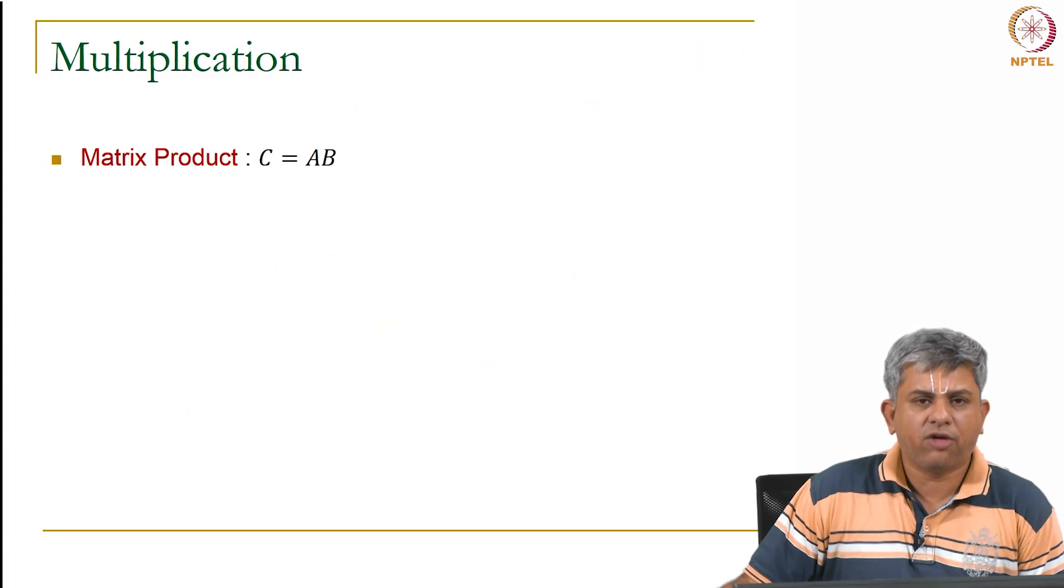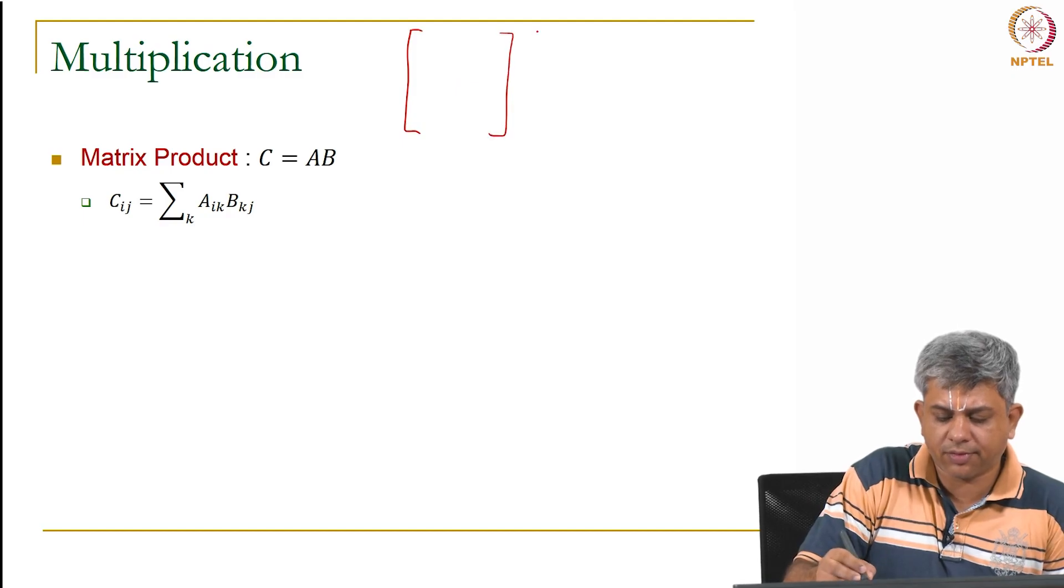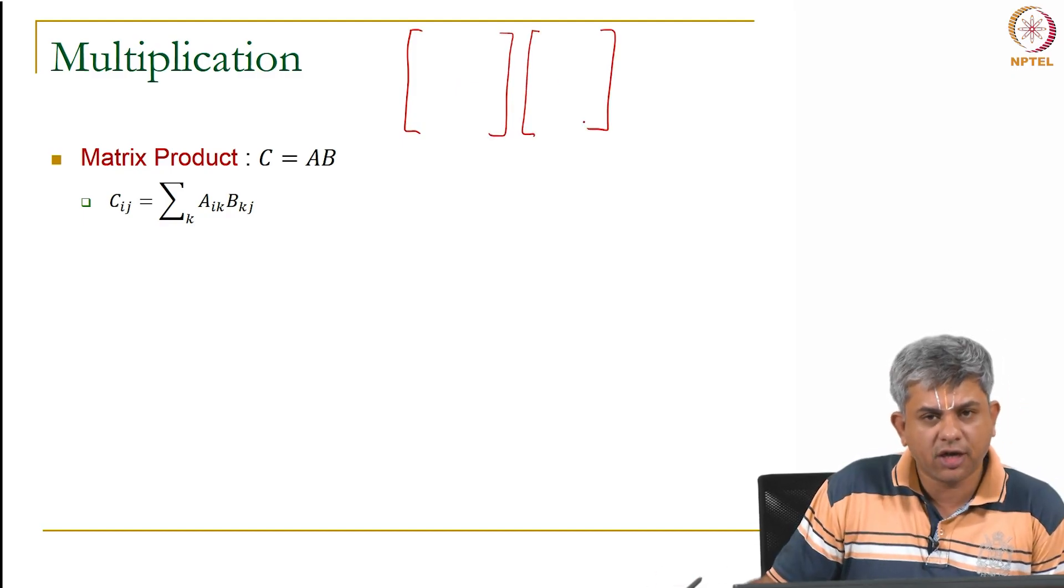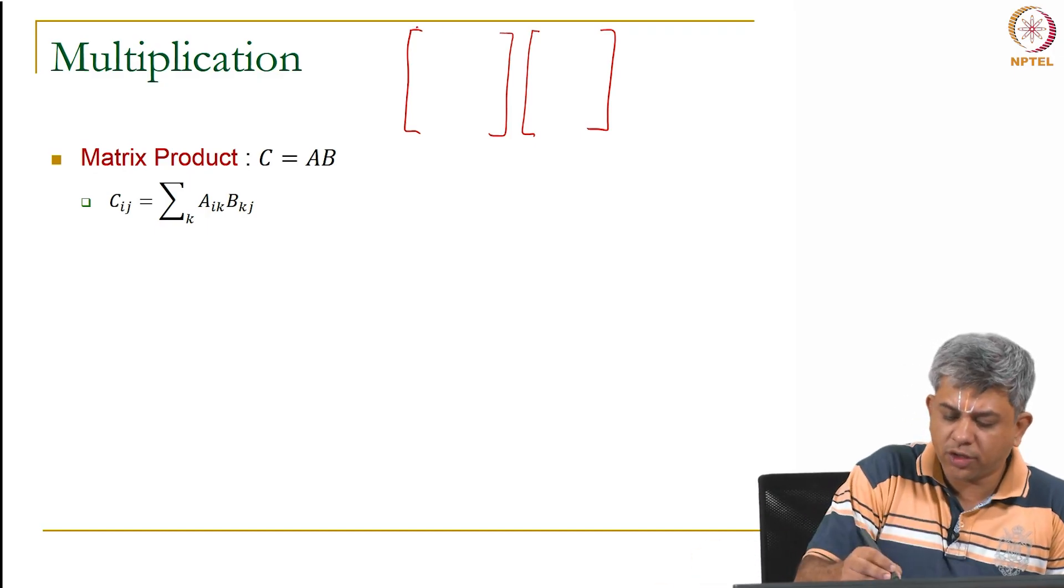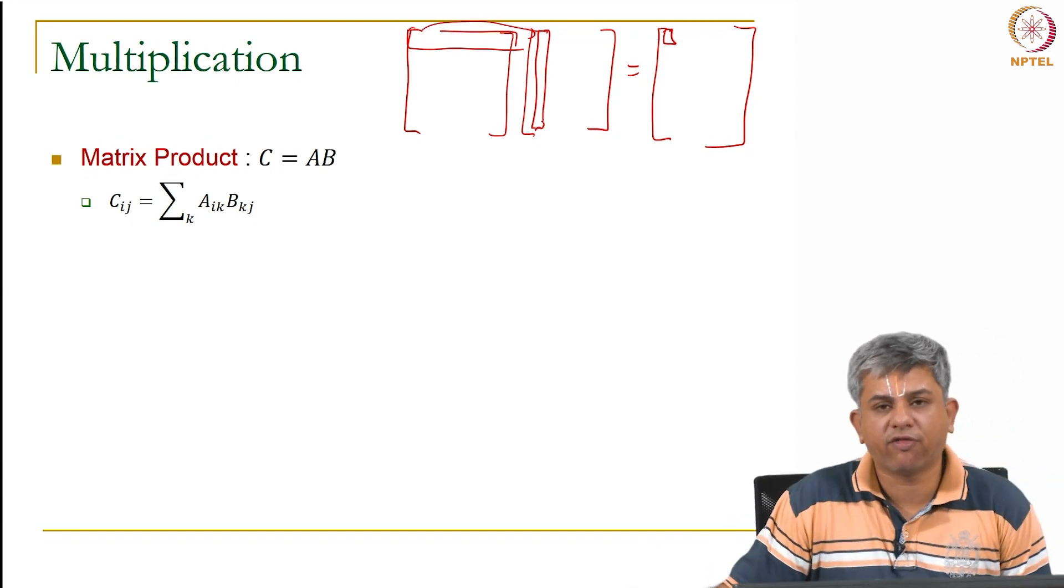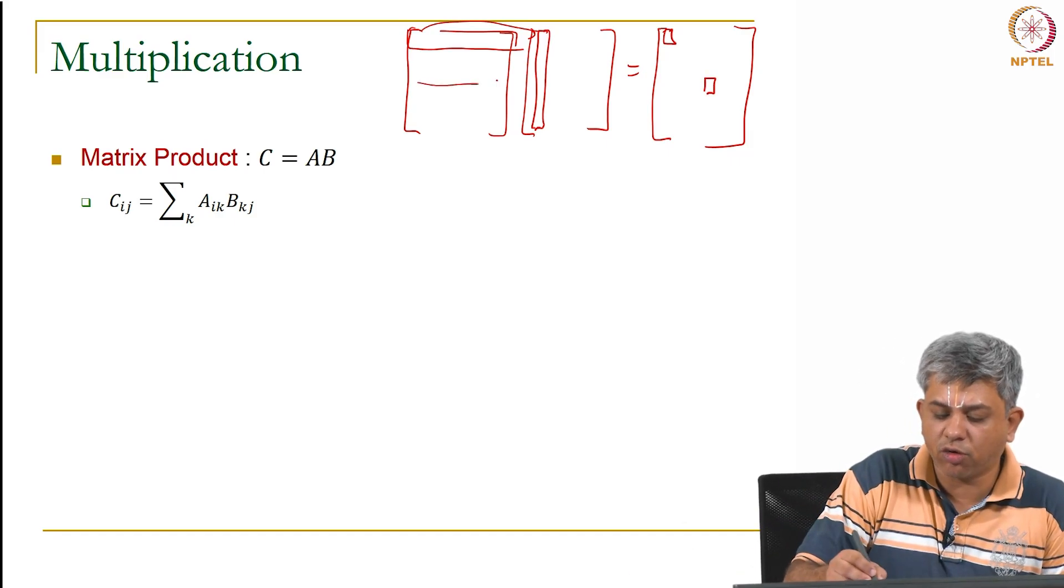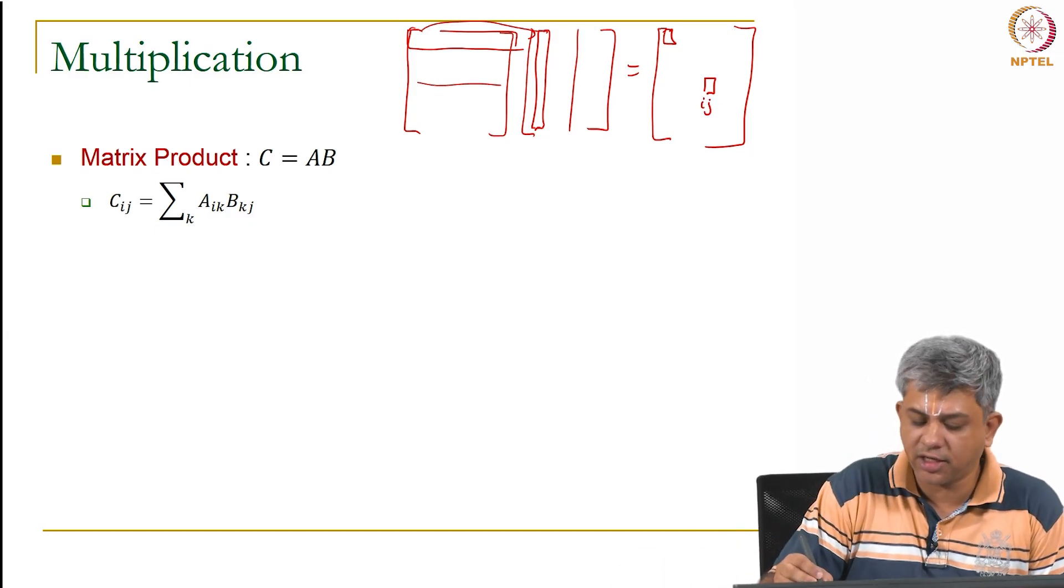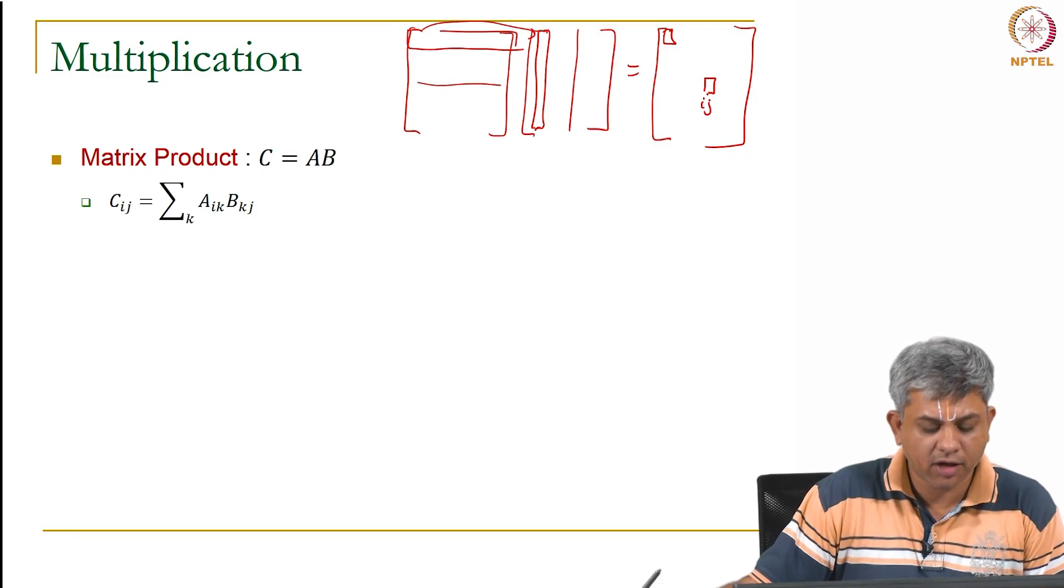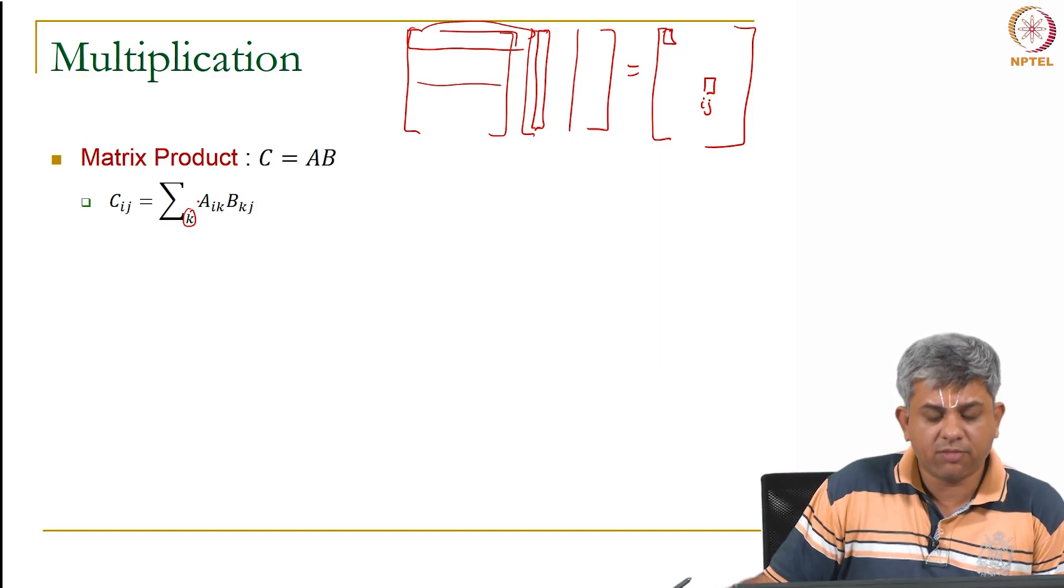Multiplication. So of course all of us are familiar with the matrix product. You know that the first element of the product comes from a dot product essentially of the first row with the first column. Similarly if I have the ijth element, this is the ith row and the jth column multiplied together give me the ij element.